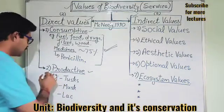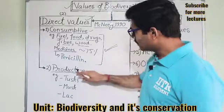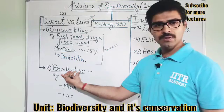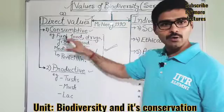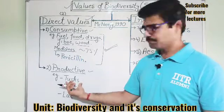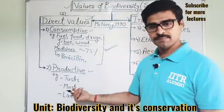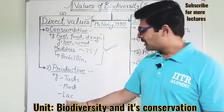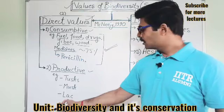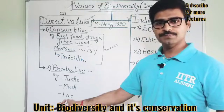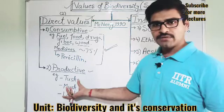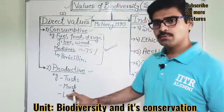The second value of biodiversity is productive value. Productive value means it is based on the products that we are getting from biodiversity, so this is also a direct value. For example, tusks from elephants, musk from musk deer, and lac from insects. Lac is a secretion by insects that is used to make different resins and dyes. These are all valuable products that we are getting from biodiversity.